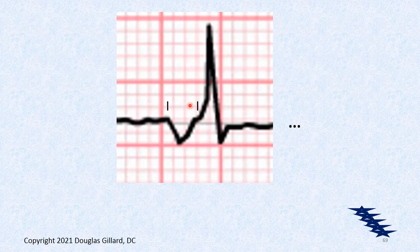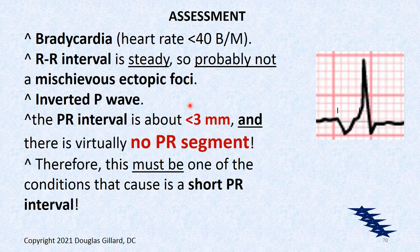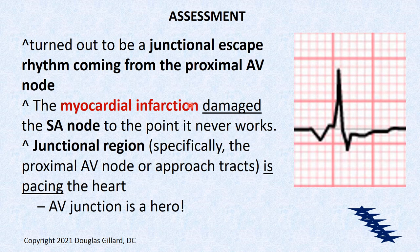This is a junctional escape rhythm, bradycardia down to about 32 beats per minute. Myocardial infarction damaged the SA node — it's broken. The junctional region cells are pacing the heart as a rescue rhythm.